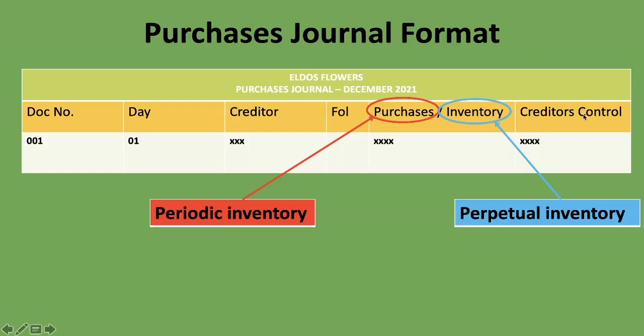The last column is 'Creditors Control' — this is where you put the actual amount that you owe the person who sold goods to you on credit. So you have the Purchases column for the inventory amount, and the Creditors Control column for the amount owed to the creditor.